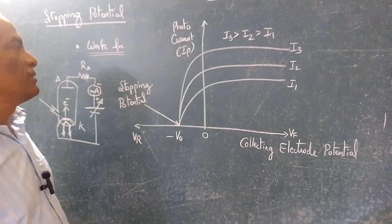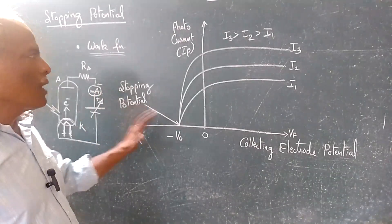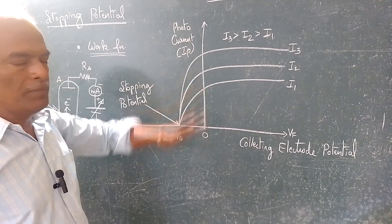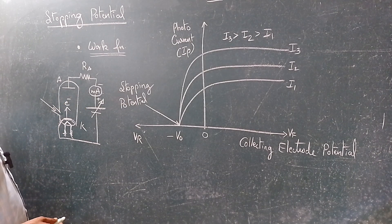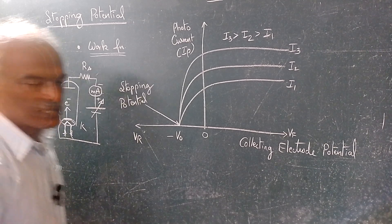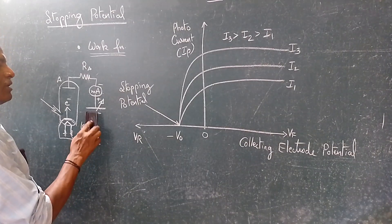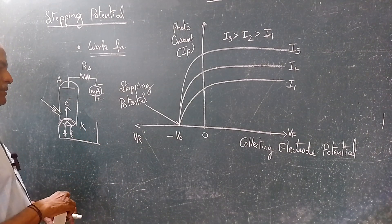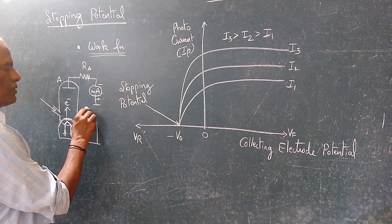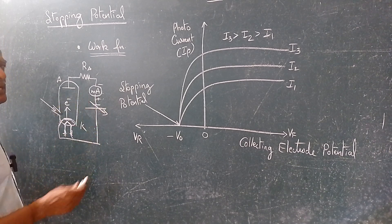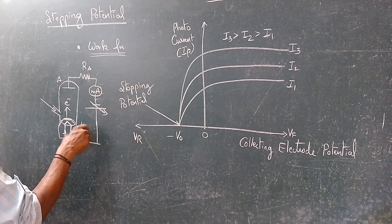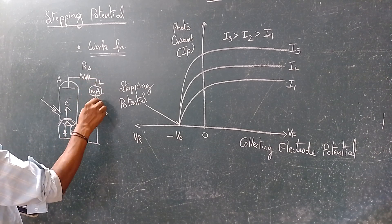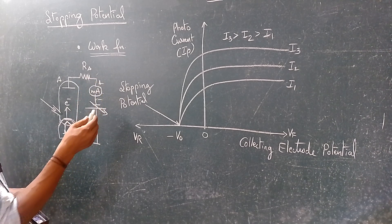Now suppose if you want to stop this photo current — the cathode is releasing electrons and you want to stop it. What you have to do is just reverse this potential. Now you are going to give a reverse voltage, so the polarity will also change. This will become plus and this will become minus, and the current is going to be negligible. Instead of a milliamps meter you can use a microamps meter here.